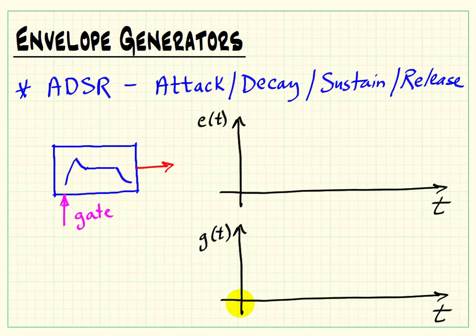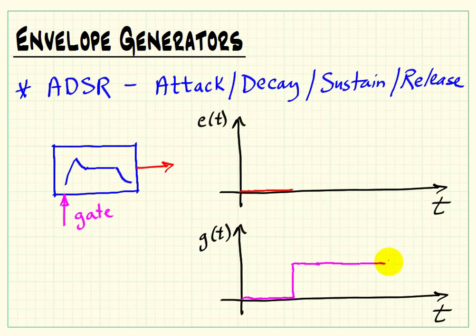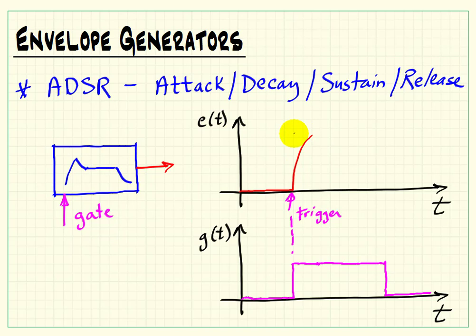The ADSR also has the gating input. Imagine a keyboard being used for our gate — as long as that gate is low, the envelope output is low. Once we start pressing a key and hold it down, at the leading edge of the gate pulse we initiate the attack region of the envelope, commonly with an exponential shape. You can adjust all of these time periods. Shortly after the attack, it goes into its decay, and instead of decaying back towards zero, it decays down to some value that's a little bit less than the maximum value.